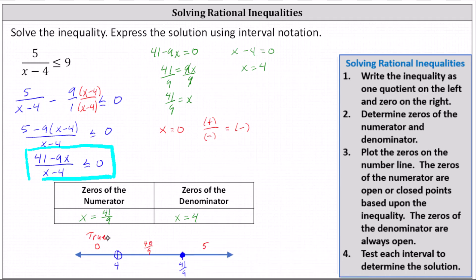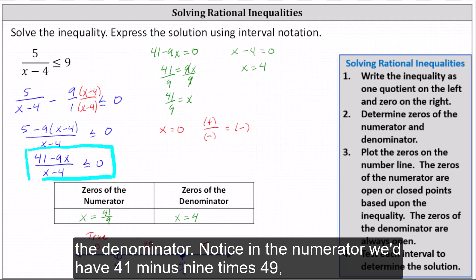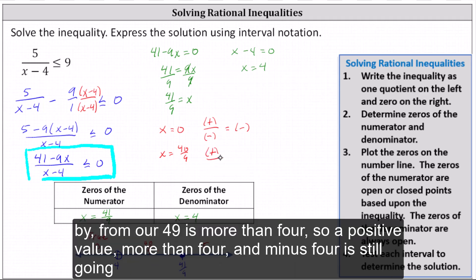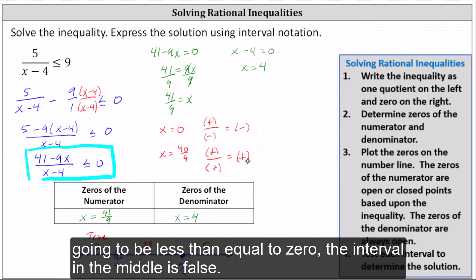Now we test 40 ninths. In the numerator, we have 41 minus nine times 40 ninths — the nines simplify out giving 41 minus 40, which is positive. In the denominator, 40 ninths is more than four, so 40 ninths minus four is still positive. A positive divided by a positive is positive, and a positive value is never less than or equal to zero. The interval in the middle is false.